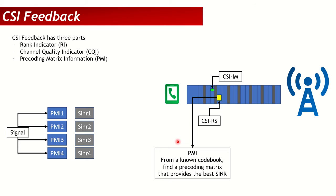Now, how does the UE know which beam it needs, and how does the gNB allocate it? The UE sends CSI feedback to the gNodeB. CSI feedback carries three entities: the Rank Indicator (RI), the Channel Quality Indicator (CQI), and the Precoding Matrix Indicator (PMI). The PMI is the most important, as it tells the gNodeB which beam to allocate. The UE reads CSI-RS (channel state information reference signals) and CSI-IM (interference measurement) sent by the gNodeB to determine the PMI.